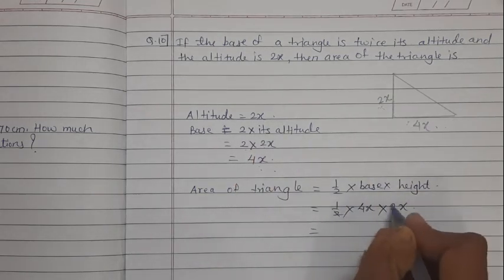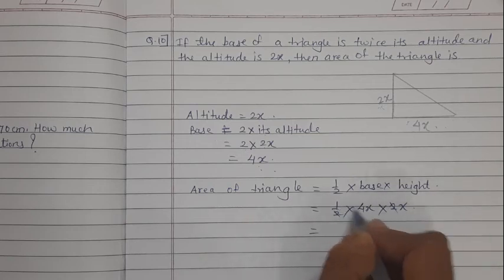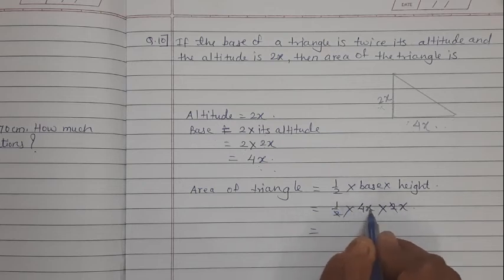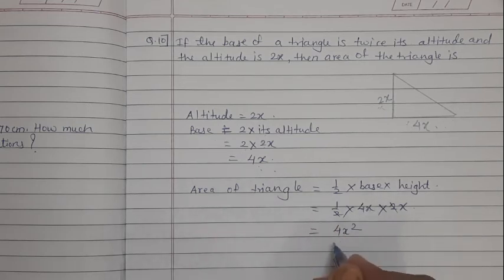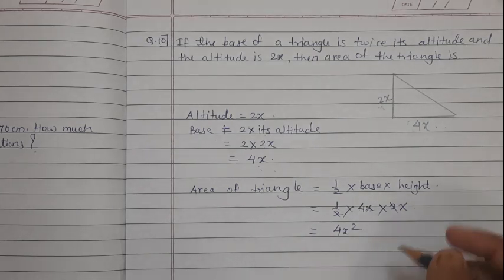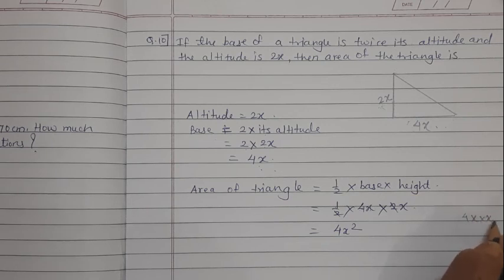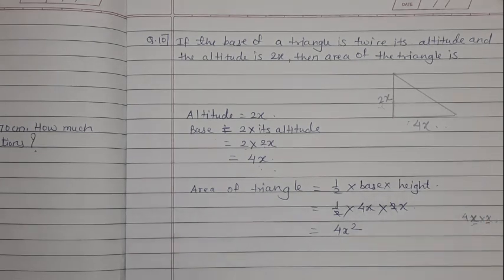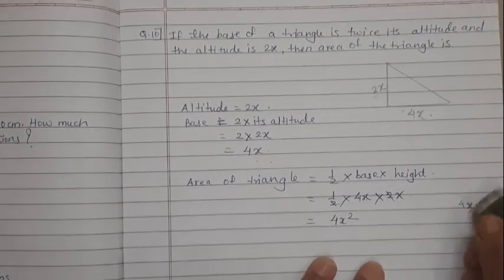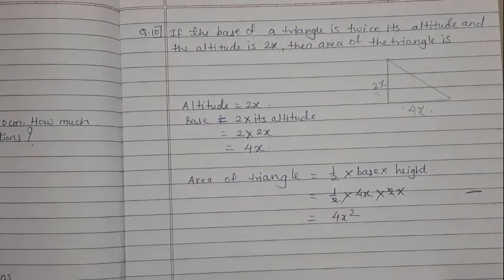Area of triangle equals 1/2 × base × height = 1/2 × 4x × 2x. The 2s cancel, giving 4x × x = 4x². So the area of the triangle is 4x².